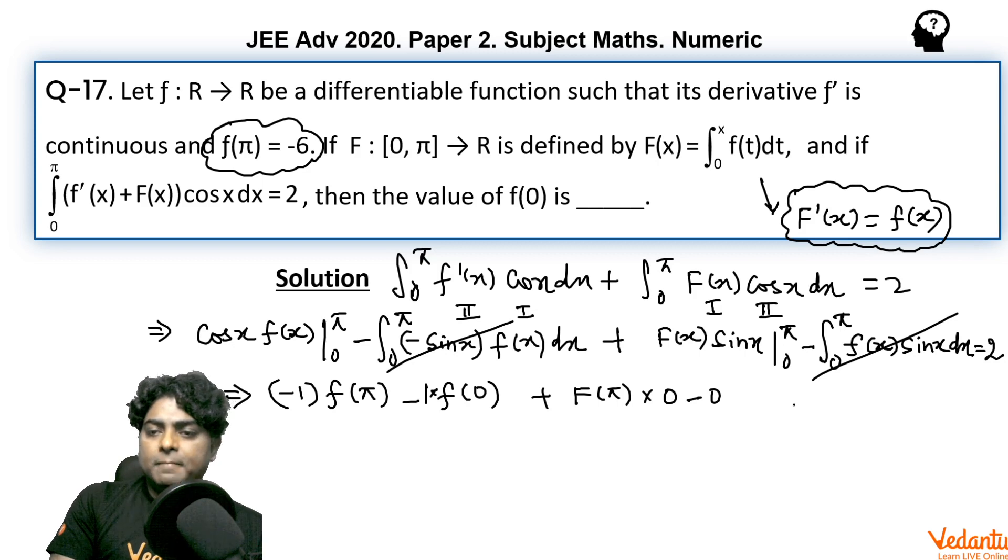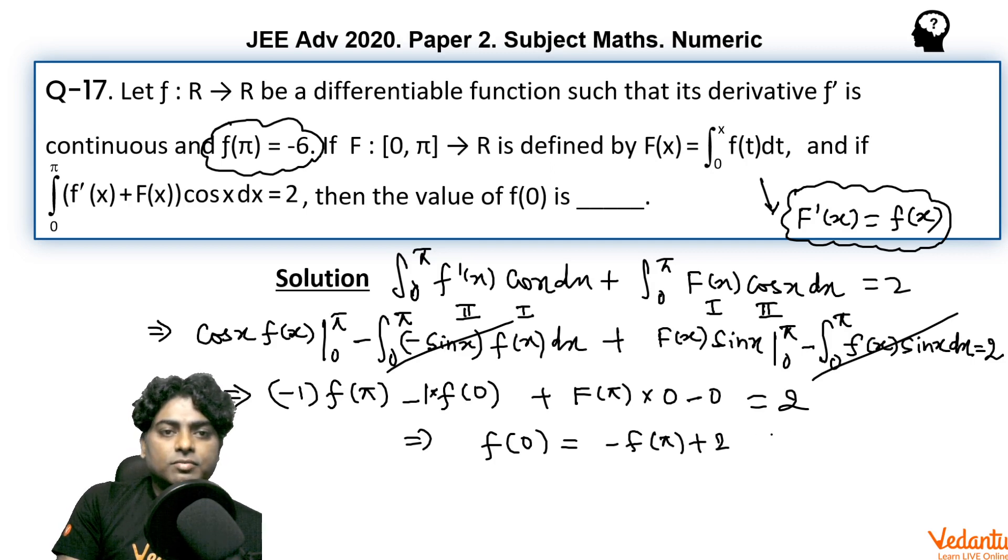Sin(π) is zero and at zero it is also zero, so finally we are getting the answer. F was defined at π and zero so there is no problem. Finally if we solve for f(0), the answer must be -f(π) + 2.